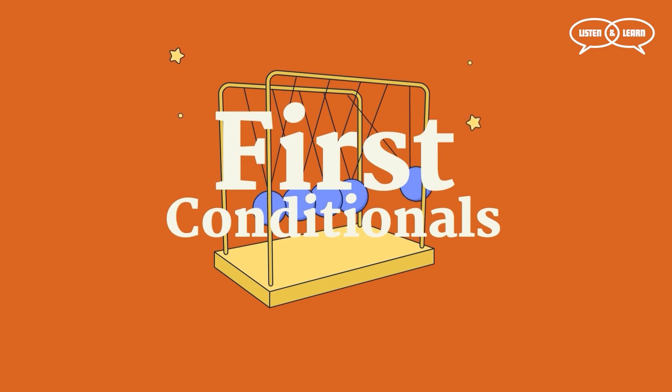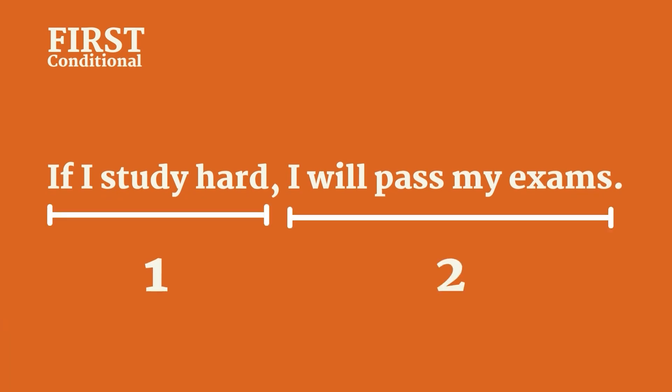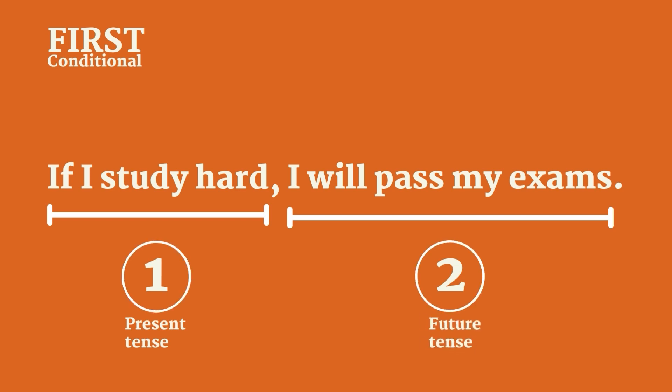Next in line are first conditionals. In this case, we're not talking about universal truths or scientific facts. We're talking about something that has a very real probability of happening. If I study hard, I will pass my exams. Again, we have two clauses. The first is the conditional clause, "if I study hard," and the second is the probable result, "I will pass my exams." In the first conditional, the conditional clause is in the present and the resulting clause is in the future.